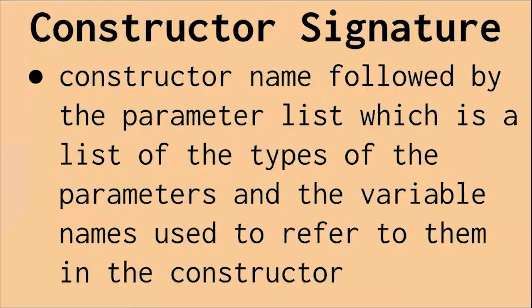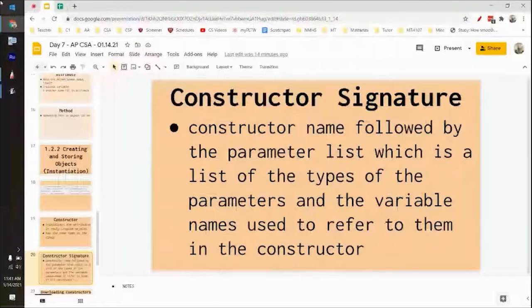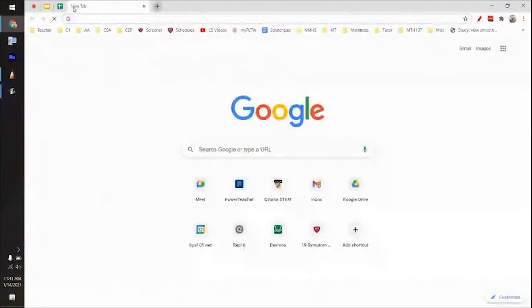Constructor signature means the constructor name followed by the parameter list. I'm going to actually show you what all this means — this will make more sense if I show you an example.